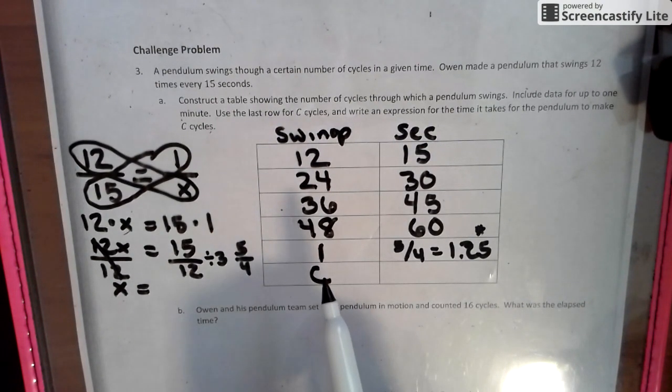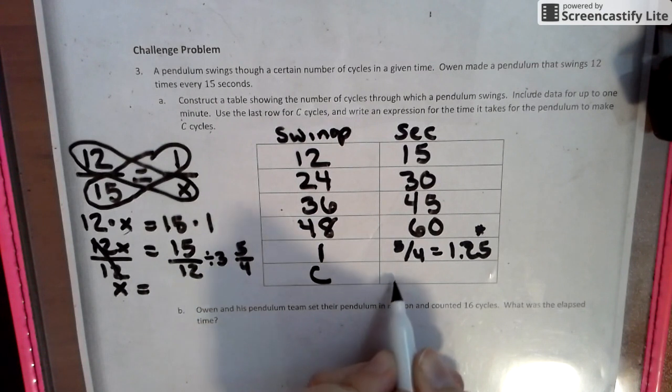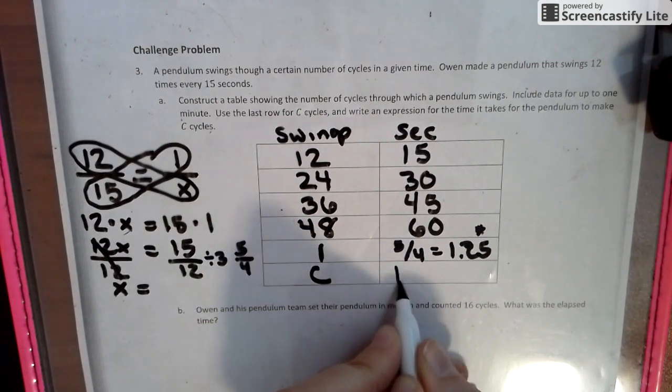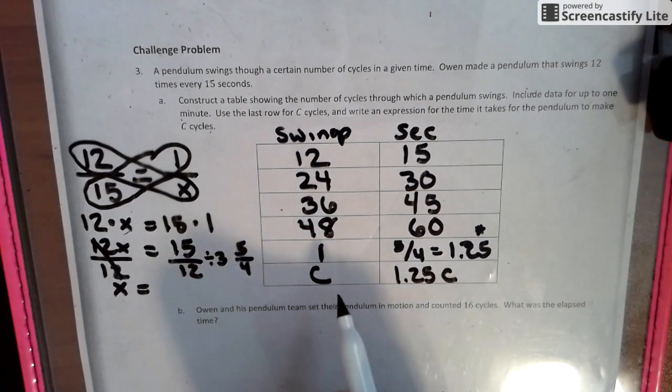So the C in order for this to happen would be five fourths C. So we can just call it five fourths C or 1.25 C. So for every one of those, it takes this.